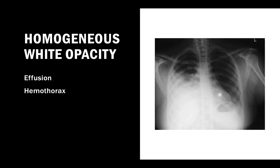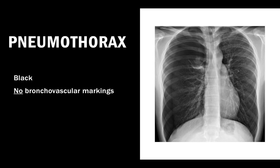Black bronchovascular markings not reaching the thoracic cage indicate pneumothorax. You can see the lung line here - beyond that line there are no bronchovascular markings. Sometimes you get confused by the line of the scapula - don't. If you see bronchovascular markings and a line, that's not pneumothorax. Pneumothorax is completely black with no bronchovascular markings.